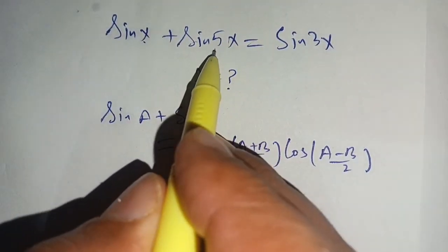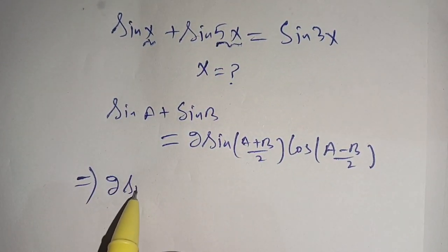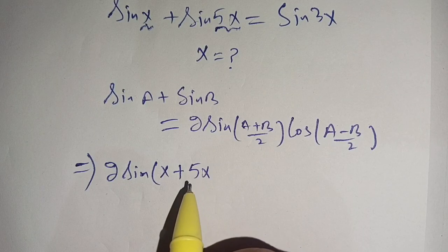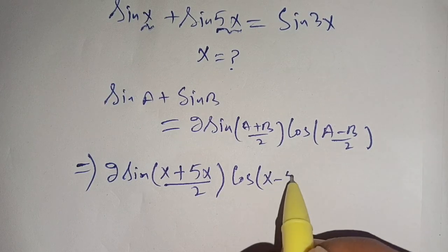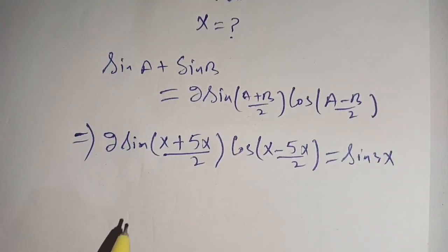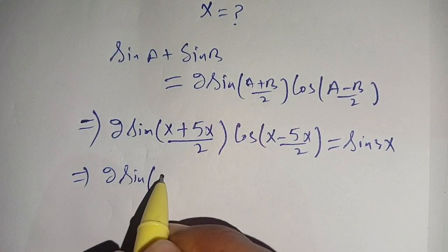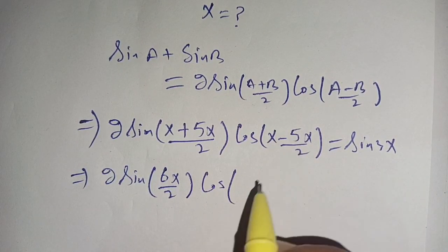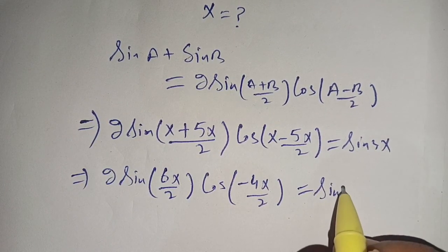Here a is x and b is 5x. Using this identity we get 2·sin((x+5x)/2)·cos((x−5x)/2) = sin(3x), which implies 2·sin(6x/2)·cos(−4x/2) = sin(3x).